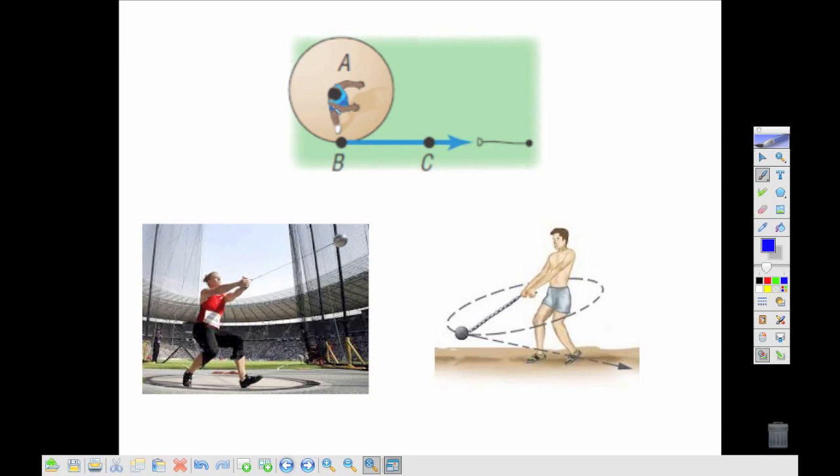So wherever you let go of this, even though this person might be looking out towards B, if he lets go here at B, the object is going to continue on a path along the tangent line.